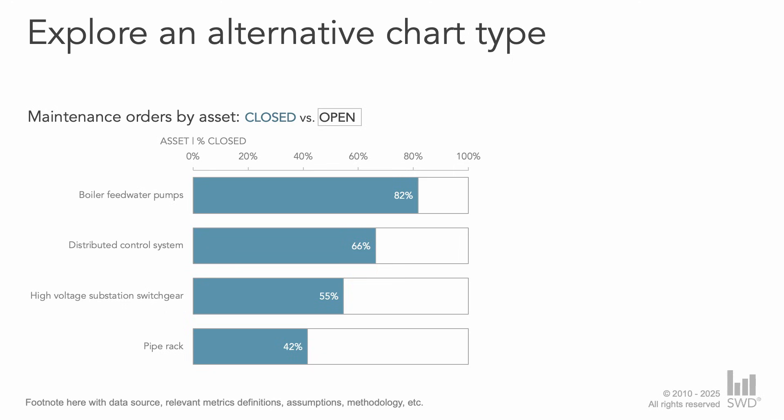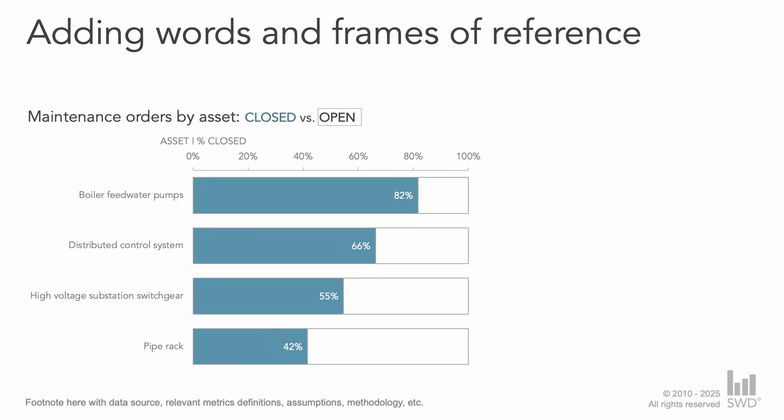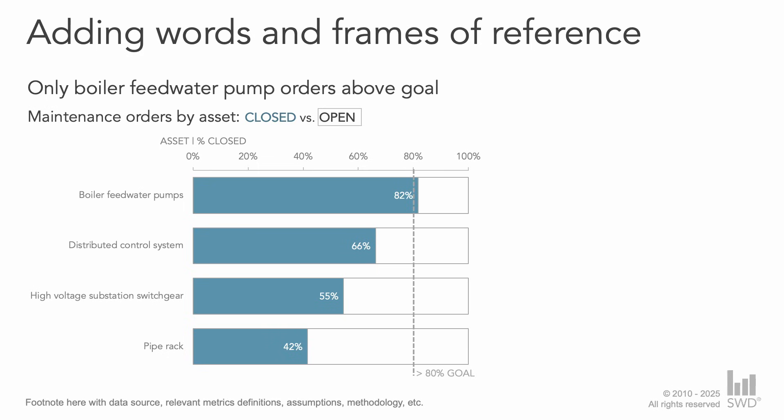This final view allows for immediate and accurate comparisons to be made. Now that I've landed upon an appropriate chart type, the final step is to add elements that help frame and explain the data: a goal line of 80%, an observational takeaway to prime our audience with the key message behind the visual, and an open question to help aid and prompt discussion.